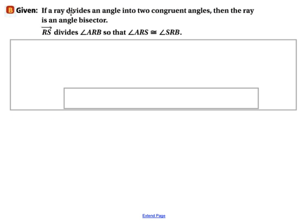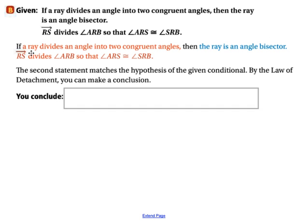Let's look at another example. If a ray divides an angle into two congruent angles, then the ray is an angle bisector. The second given statement says Ray RS divides angle ARB so that angle ARS is congruent to angle SRB. Our hypothesis, shown in red, is that a ray divides an angle into two congruent angles, and this does match. So therefore, we may conclude that ray RS is indeed an angle bisector.